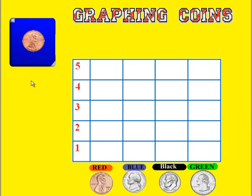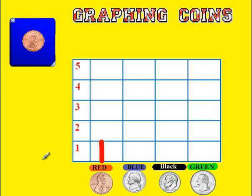Let's look at the first one — we have a penny. Let me draw a line to show you what we want you to do. Since it is one penny, we are going to draw a line up like this. You pick up a red pen and draw a line right next to mine, then place the pen back in the tray. Do that now.